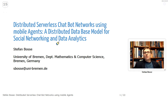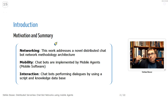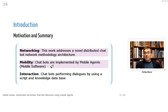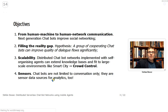This is basically a distributed database model for social networking and data analytics. The primary goals address three areas: networking — a novel distributed chatbot network methodology and architecture; mobility — chatbots implemented by mobile agents, meaning mobile software; and interaction — chatbots performing dialogues using a script and knowledge database.